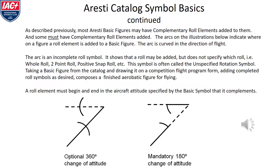Most Aresti basic figures in families 1 through 8 may have complementary roll elements added to them, and some must have complementary roll elements added. The arcs on these illustrations indicate where on a figure a roll element is added. Please note the arc is always curved in the direction of flight. The arc on a basic figure is an incomplete roll symbol — it shows that a roll may be added, but it does not specify exactly which roll should be added. This symbol is often called the unspecified rotation symbol. So we take a basic figure from the catalog and add rolls as desired to compose a finished aerobatic figure that can be flown.